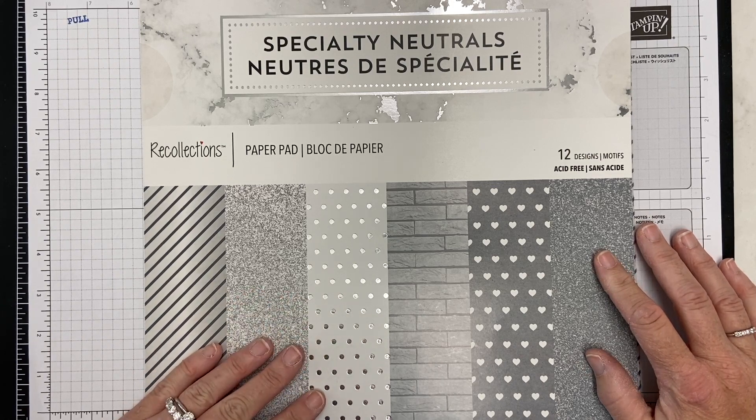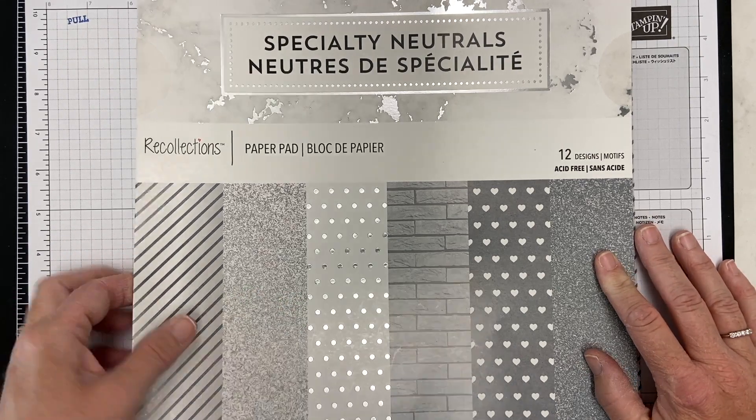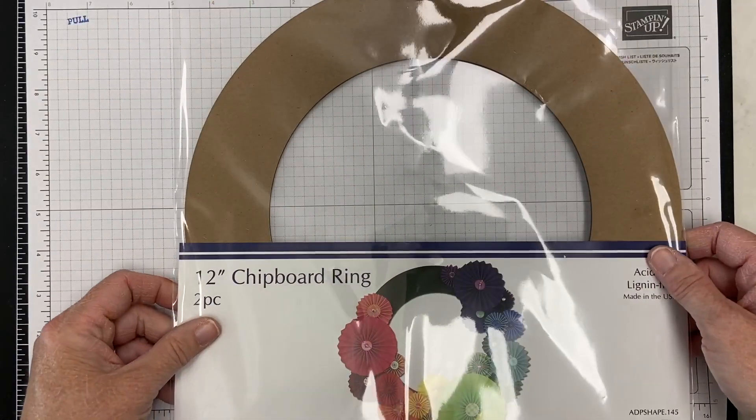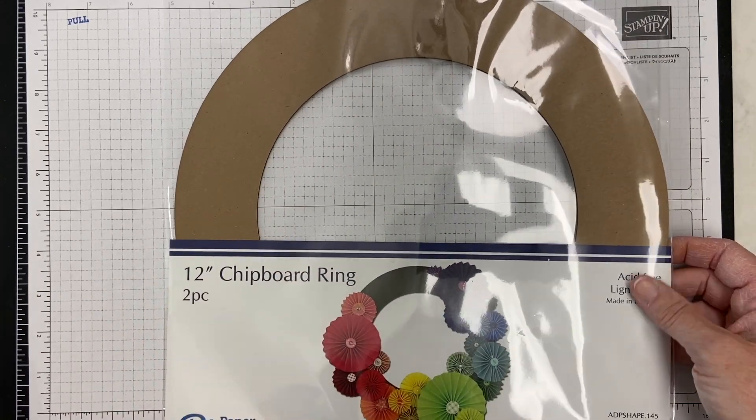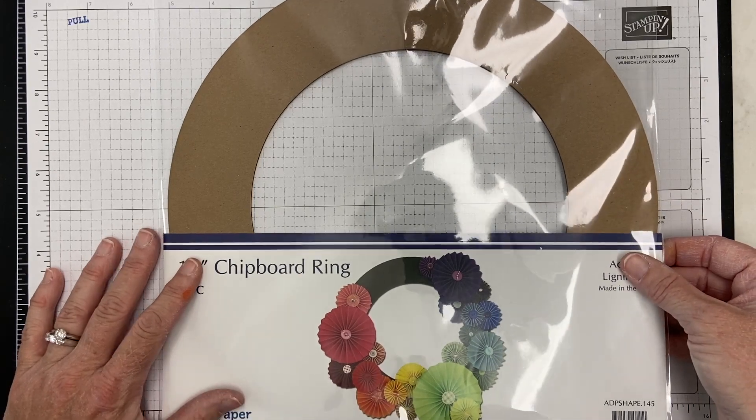I wanted to share a couple of these projects with you, so let's get started. The first project I'm going to make is a wreath and I am using a 12-inch chipboard ring. This is from Paper Accents. I ordered this from Dick Blick, the company that sells a lot of art stuff.